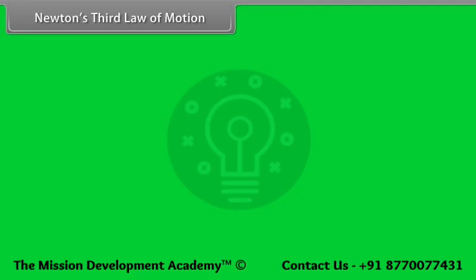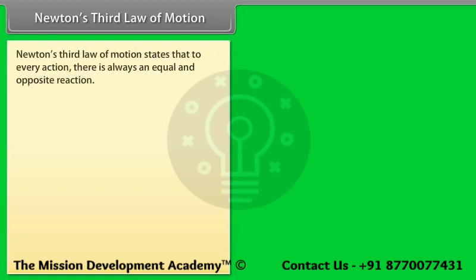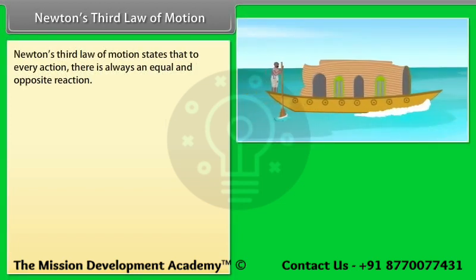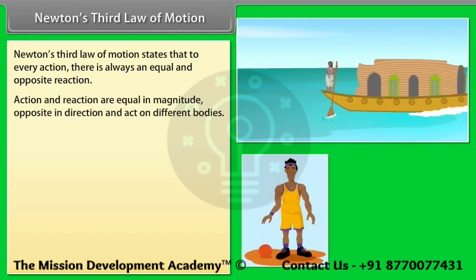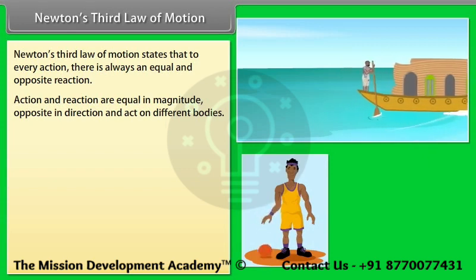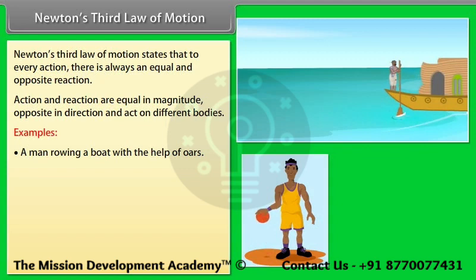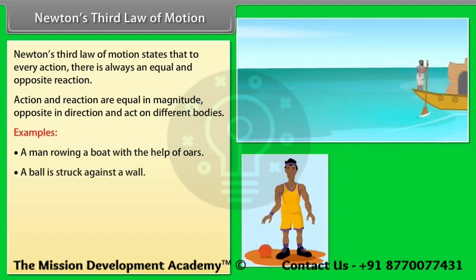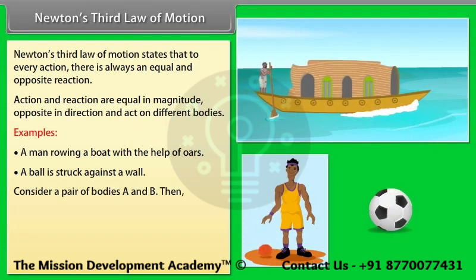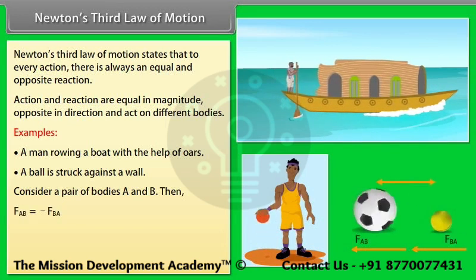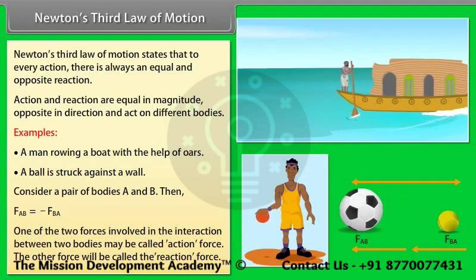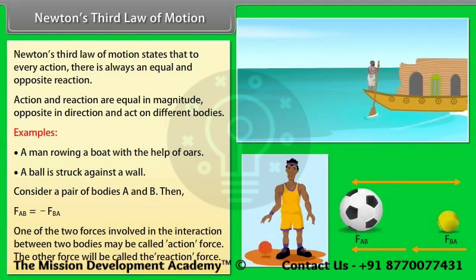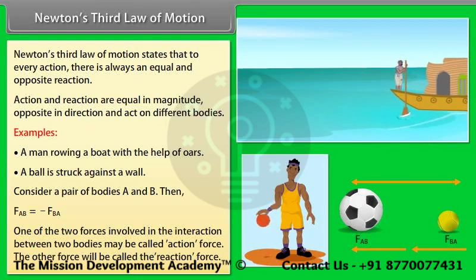Newton's third law of motion states that to every action there is always an equal and opposite reaction. Action and reaction are equal in magnitude, opposite in direction, and act on different bodies. Examples include a man rowing a boat with oars and a ball bouncing on the ground. For a pair of bodies A and B: F_AB = −F_BA. One of the two forces may be called the action force, and the other the reaction force.